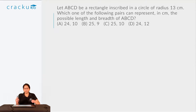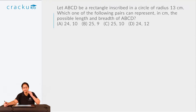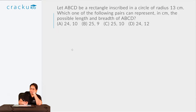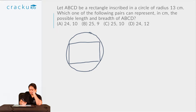Let's take a look at the following question that appeared in CAT 2018. Let ABCD be a rectangle inscribed in a circle of radius 13 centimetres. Which of the following pairs can represent, in centimetres, the possible length and breadth of ABCD? So we have a circle of radius 13 centimetres and we have rectangle ABCD inscribed inside the circle.